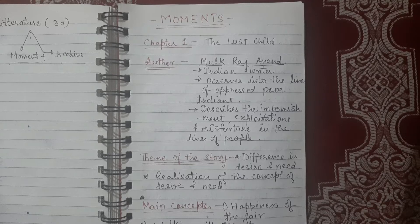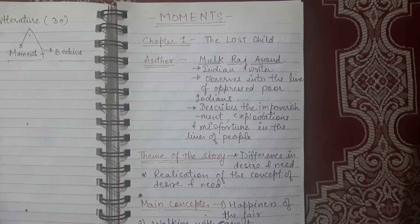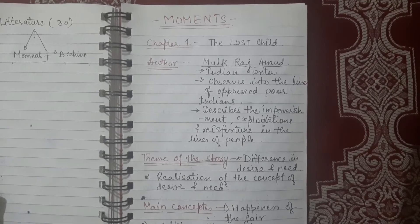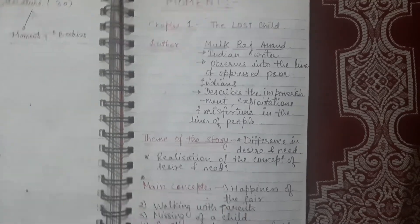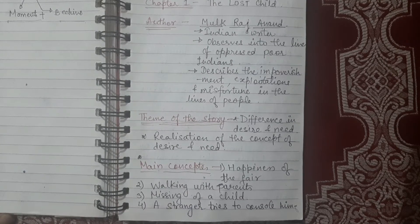In The Lost Child, generally when we hear the word 'lost' in terms of a child or anyone, we tend to make a concept of fear. The first concept that comes to mind is lost in fear. But this author, Mulkraj Anand, has described in such a beautiful way how a child gets lost and what the feeling of the child is at that time. Basically, the theme of this story is telling us the difference between desire and need, and the realization of that concept.